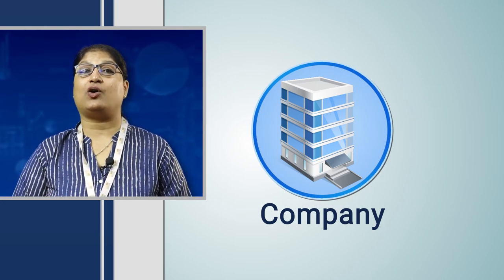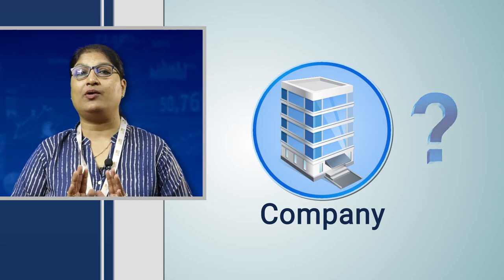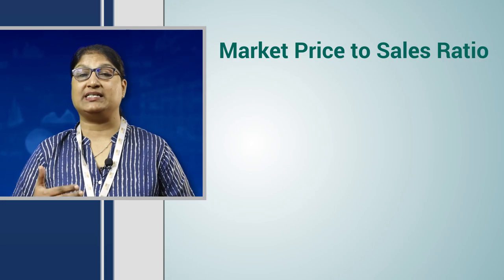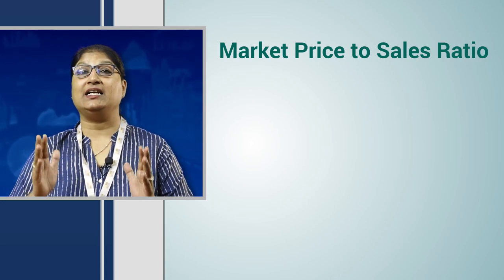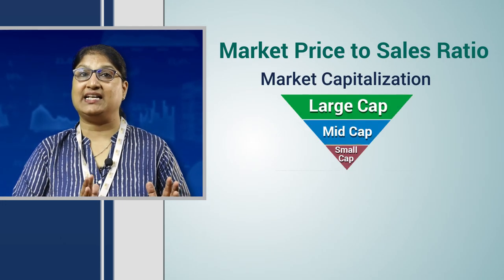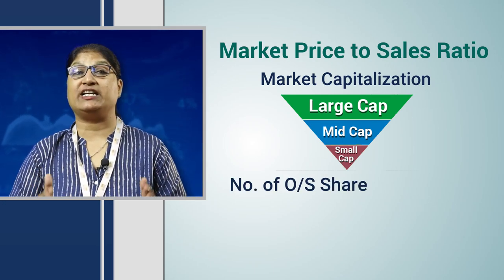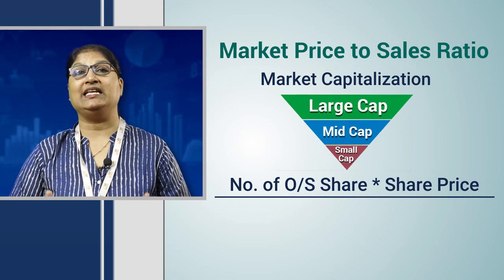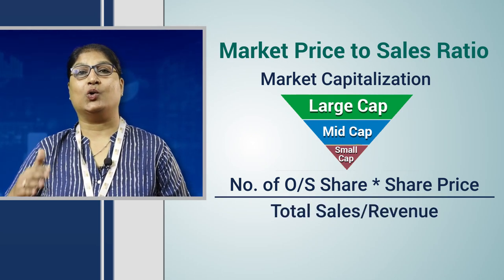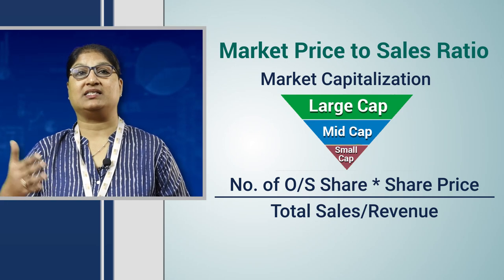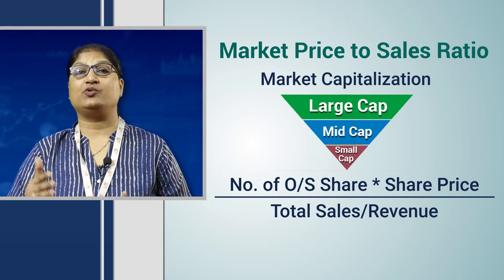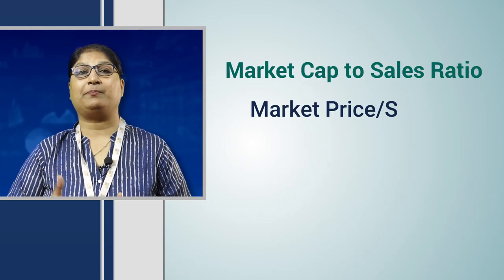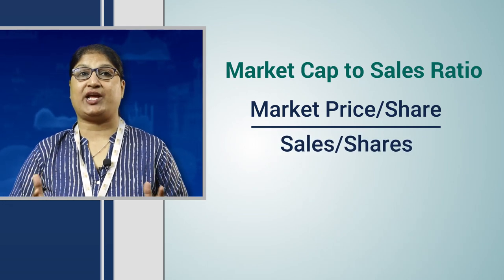The market cap to sales ratio utilizes a company's market capitalization and revenue to determine whether the stock is valued properly or not. It is calculated by taking a company's market capitalization — that is, the number of outstanding shares multiplied by the share price — and dividing by the company's total sales or revenue over the past 12 months. The formula is: Price to Sales Ratio = Market Price per Share ÷ Sales per Share, or Market Cap ÷ Total Sales.